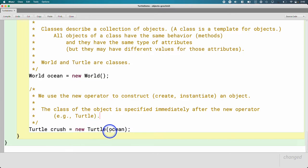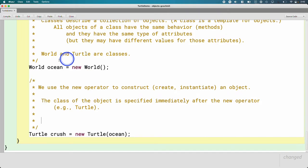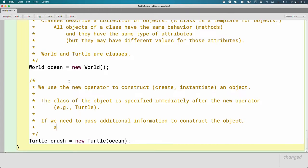So here's the new operator. And here's the class of the object we want to make a new object from so new turtle. I want to make a new turtle that actually reads pretty well. I think Java did well with us. Sometimes that's all we need. Like in the previous line of code here, new world. I want to make a new world done. Sometimes, however, if we need to pass additional information to construct the object, arguments are specified in parentheses after the class. In this case, ocean.